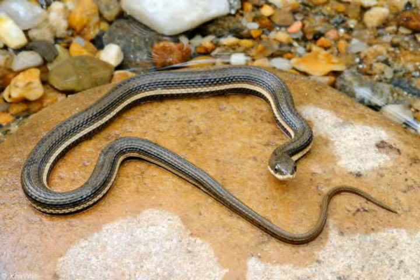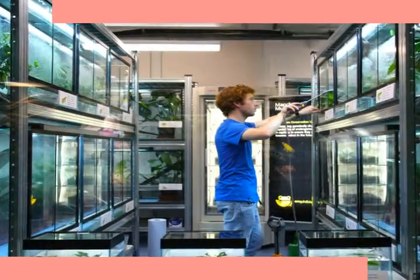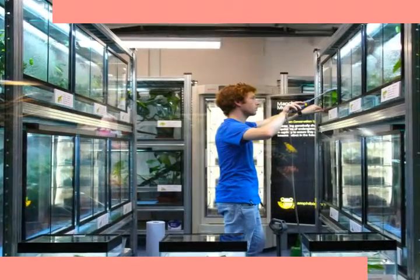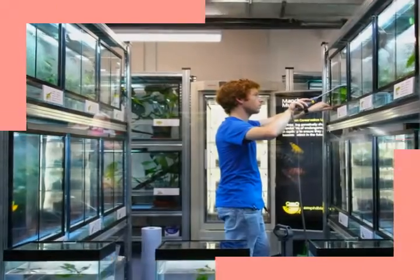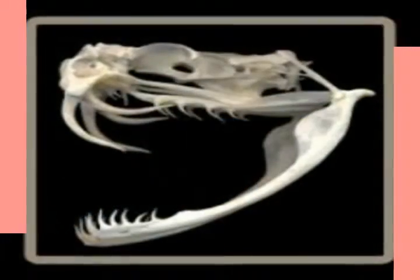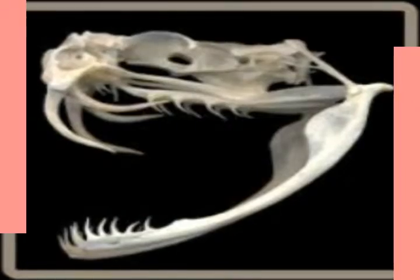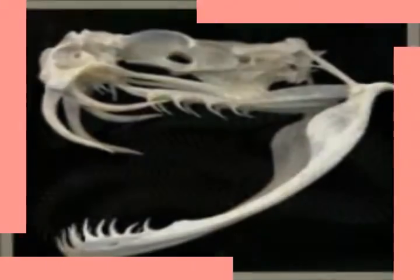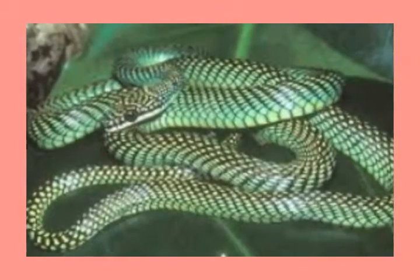Snakes have a specialized row of scales along the underside of their bodies called ventral scales. Some families of snakes retain vestigial pelvic girdles, but none of them have pectoral girdles. Snakes have unique skulls: the bones of their upper jaws are not united at the snout but are free to move away from one another, allowing the passage of larger prey.